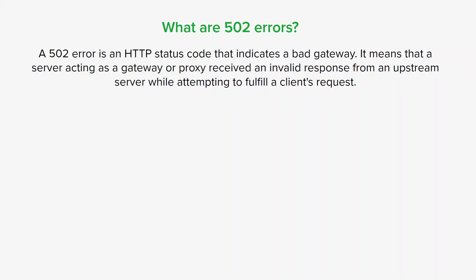In the case of a 502 error you'll typically see a message like '502 bad gateway'. Here's a breakdown of the common scenarios that cause a 502 error. The first one is server overload. The server acting as a gateway or proxy may be overloaded or experiencing high traffic, causing it to fail to receive a timely response from the upstream server. This can happen if the upstream server is unable to handle the number of requests it's receiving, so it breaks down and loses the connection.